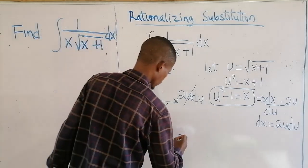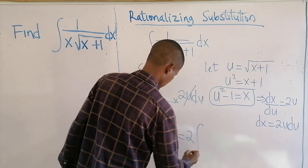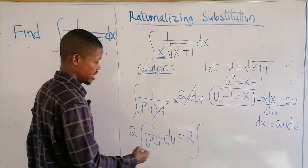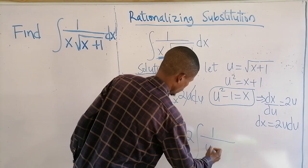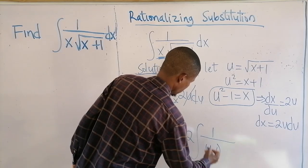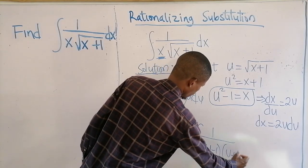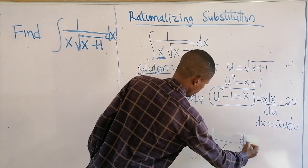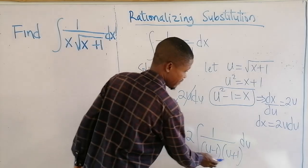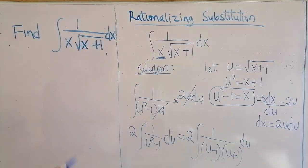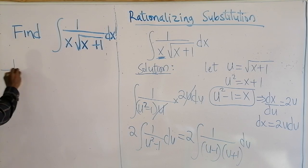So we have 2 times the integral of 1 over (u squared minus 1) du. Now u squared minus 1 is a difference of two squares, so it factors as (u minus 1)(u plus 1). This is a product of linear factors in the denominator, which calls for partial fractions.